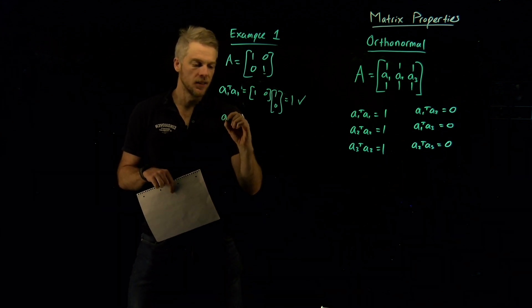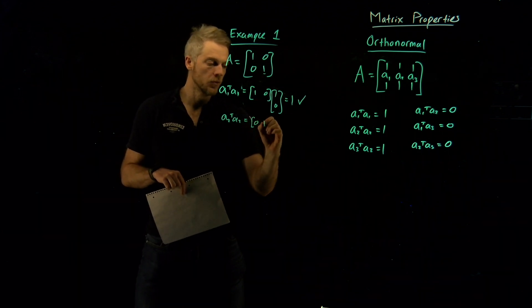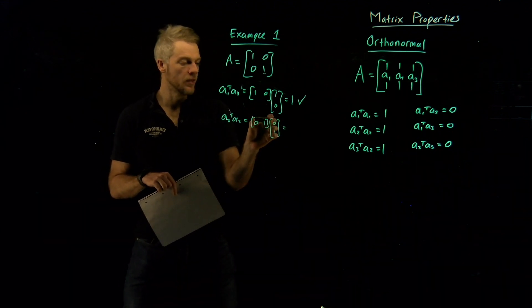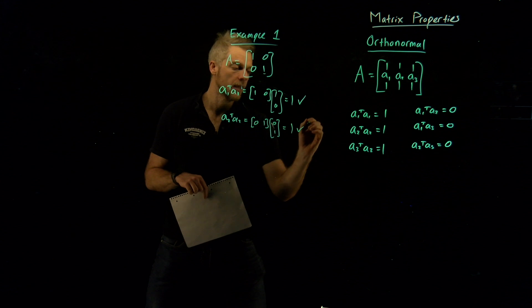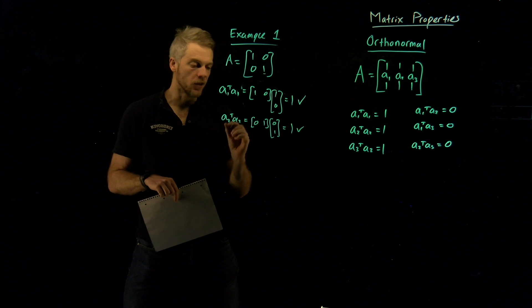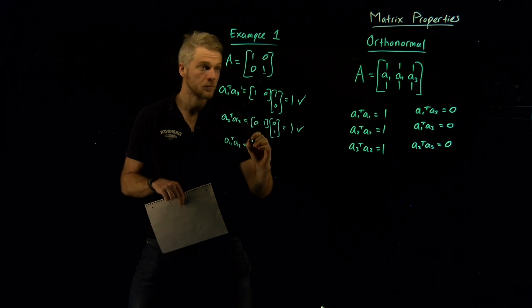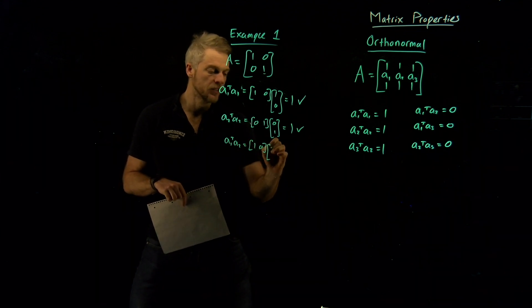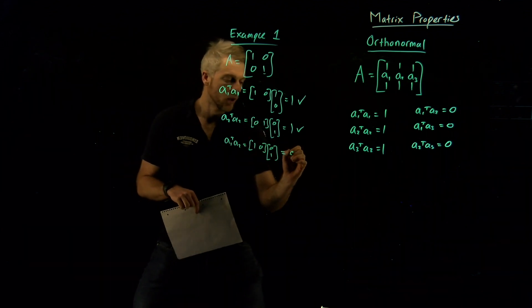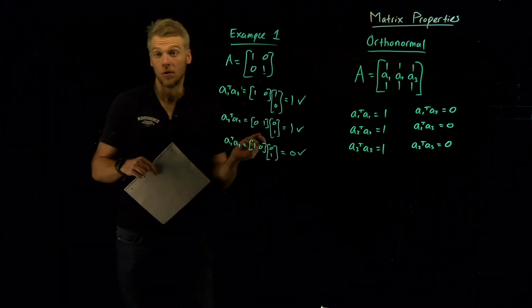The other condition is that A2 transpose A2 must equal 1. A2 is [0, 1], so [0, 1] times [0, 1] equals 0 times 0 plus 1 times 1, which is 1. Now let's check that all other combinations are zero. There's only one other combination: A1 transpose A2, which is [1, 0] times [0, 1], giving 1 times 0 plus 0 times 1, which is indeed 0. So all properties are satisfied, and the identity matrix is therefore an orthonormal matrix.